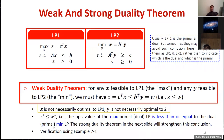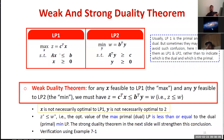A very special case is when z* is the optimal value to LP1 and w* is the optimal value to LP2. We still have z* ≤ w*. In other words, the maximum optimal value of LP1 is still less than or equal to the minimum optimal value of LP2. In the strong duality theorem you'll see these two will actually be equal, but for now let's stay with z* ≤ w*.